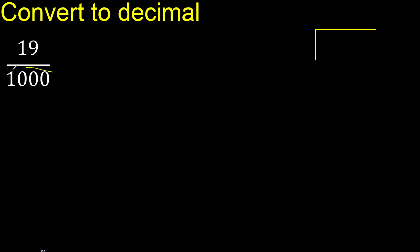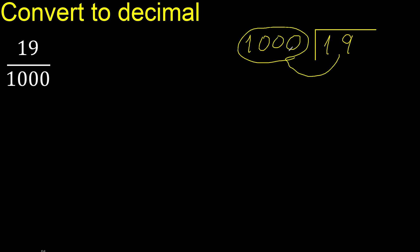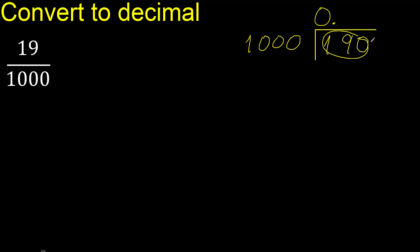Nineteen divided by one thousand. Nineteen is less than one thousand, therefore complete — always complete with zero. Here zero point is less, therefore zero zero point is here.